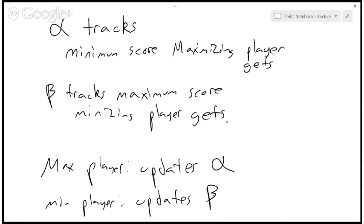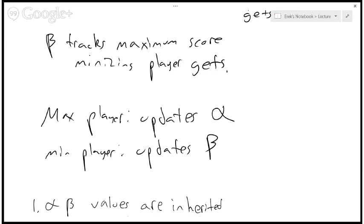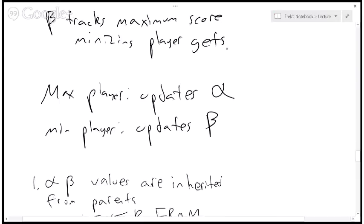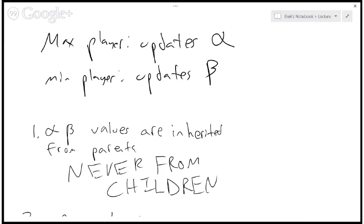It's important to remember what alpha and beta are tracking. Alpha tracks the minimum score that the maximizing player can get. It's a lower bound on his score. He's trying to get the highest score possible and alpha will always tell him what the worst possible score he can get is. Beta is the opposite. It tracks the maximum score that the minimizing player can get. The minimizing player wants the lowest possible score, and so beta equals the worst score that the minimizing player can get if all players play optimally.